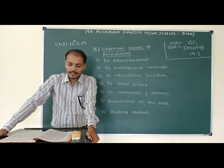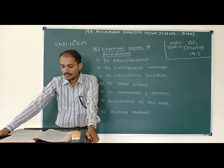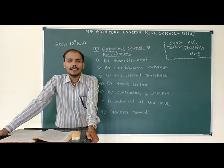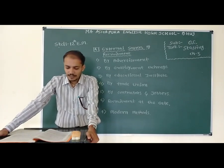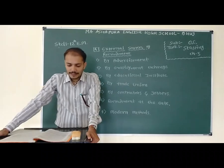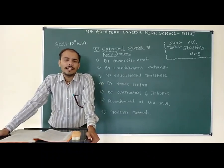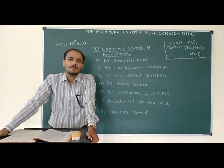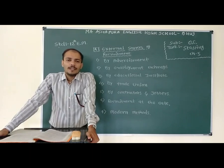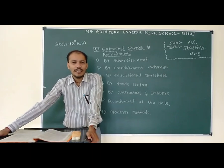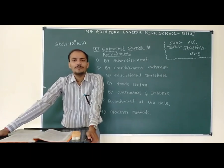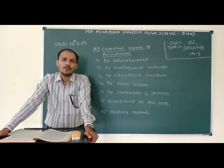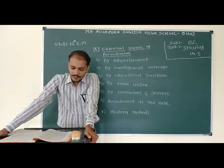Sixth point is recruitment at the gate. Workers can be recruited by a business enterprise by placing a notice at a factory gate. Recruitment kaise kiya jata hai — factory gate ke bahar ek stick laga di jati hai, jisme vacancy, staff ki vacancy, cashier ke liye vacancy, 18 se lekar 28 years tak ke candidates ke liye vacancy likhi hoti hai. Aisa poster ya banner company ke gate ke bahar lagwaate hain.